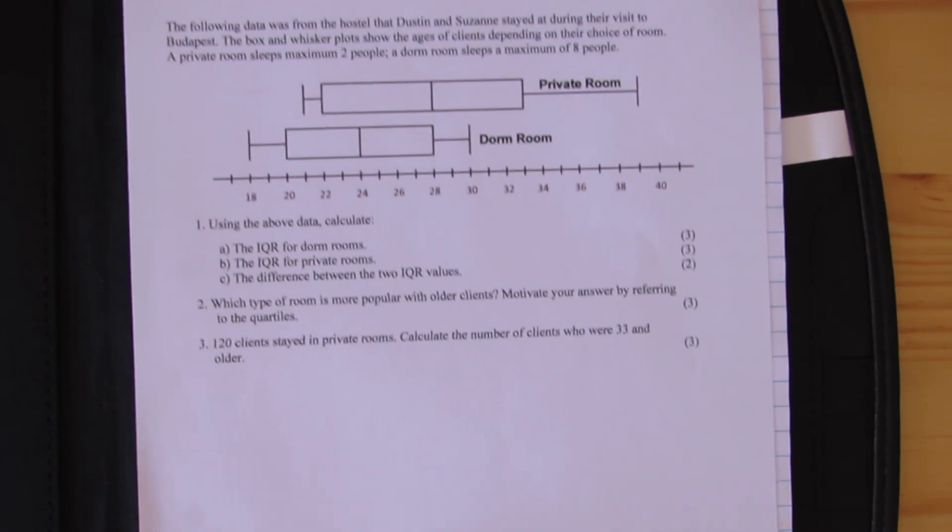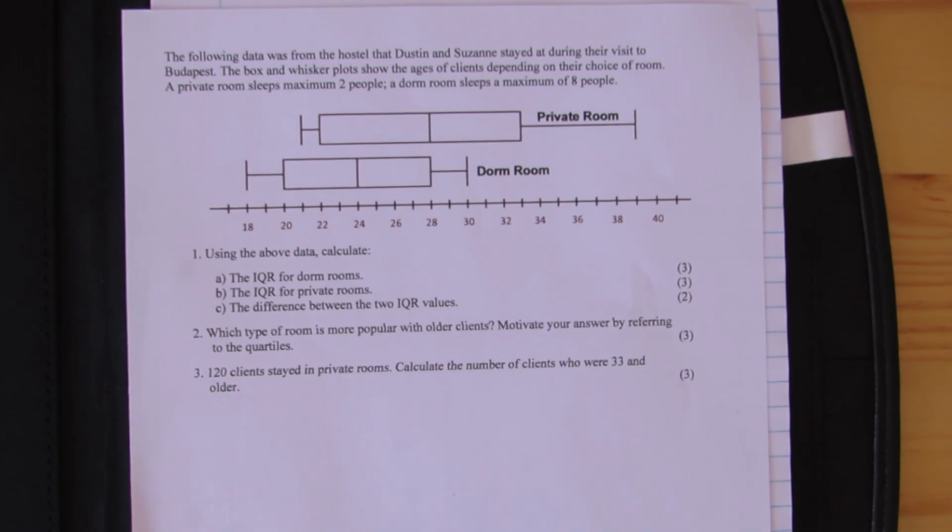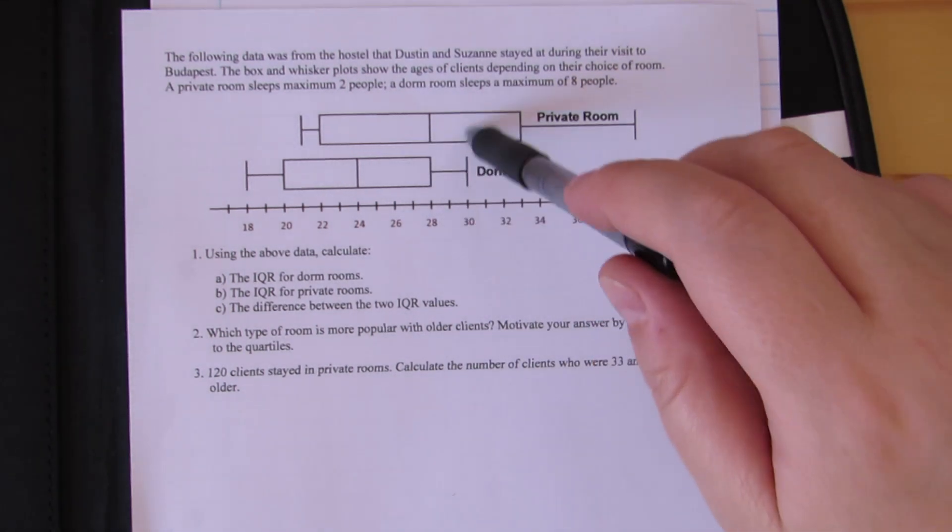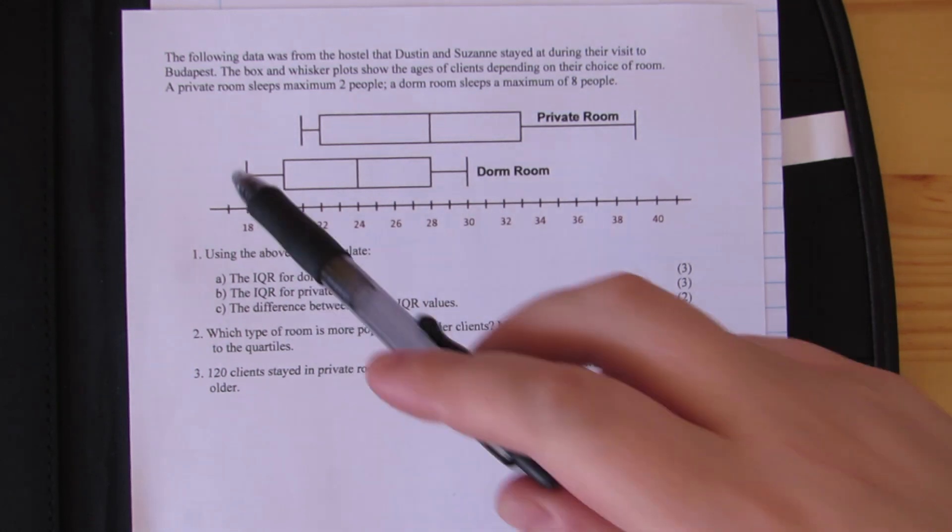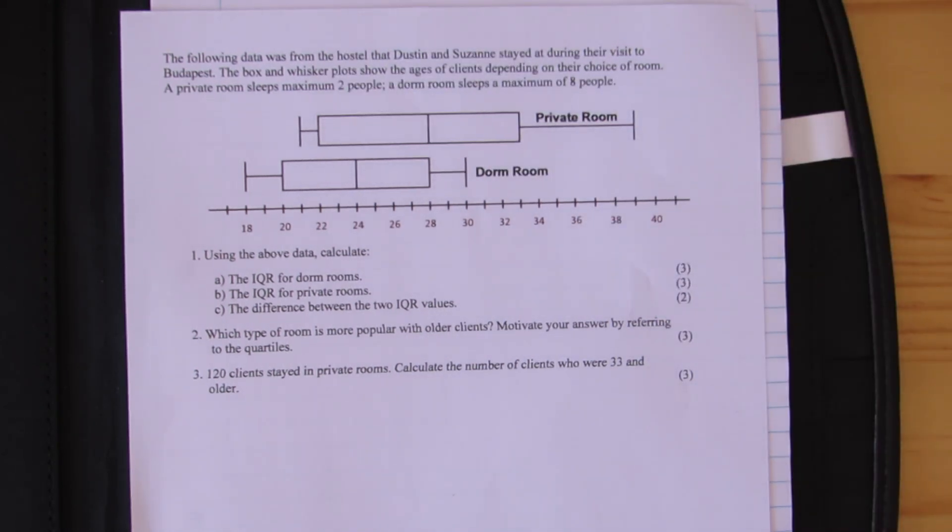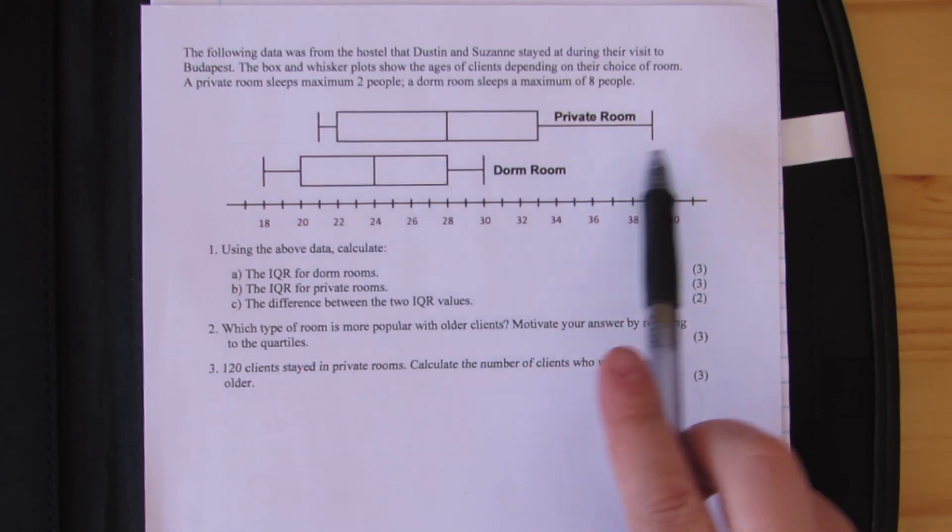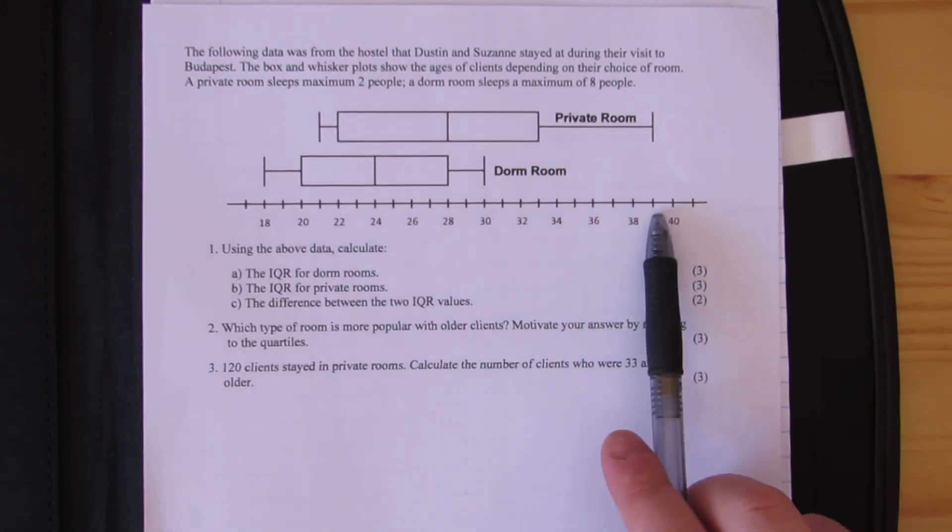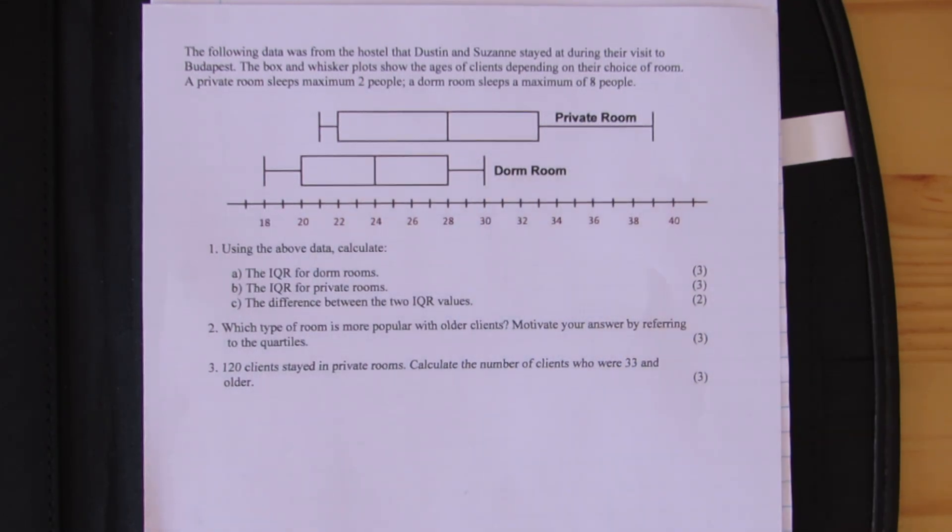The following data is from hostels that Dustin and Suzanne stayed at during their visit in Budapest. We've got two box and whisker plots given to us along here with our scale. This is for a private room and this is for dorm rooms. The box and whisker plots show the age of clients depending on their choice of rooms. A private room sleeps a maximum of two people, a dorm sleeps a maximum of eight people. You'll see the private rooms start here at 21 and go up to 39, and the dorm rooms start at 18 and go up to 30.